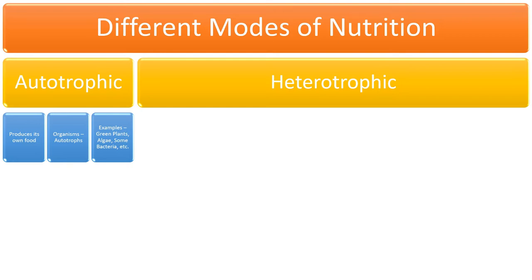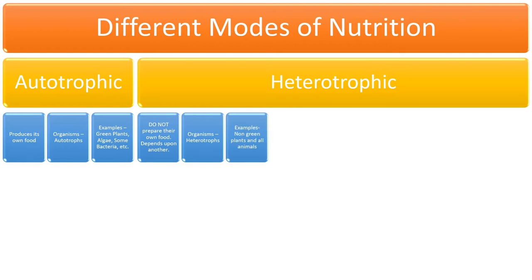Heterotrophic mode of nutrition is seen in organisms that are non-photosynthetic. It means they cannot prepare their own food and they depend upon other organisms. Organisms showing heterotrophic mode of nutrition are called heterotrophs. Examples include non-green plants and all animals.